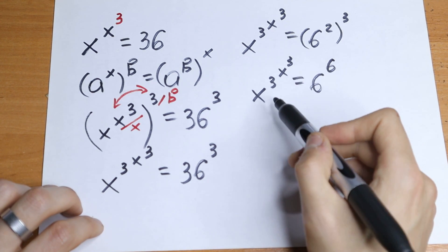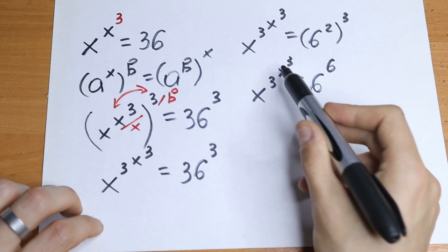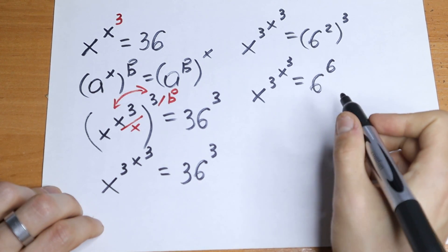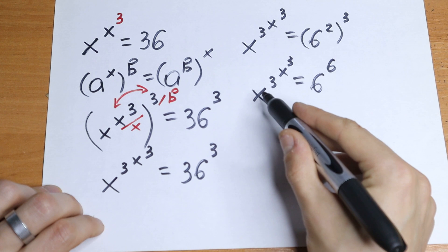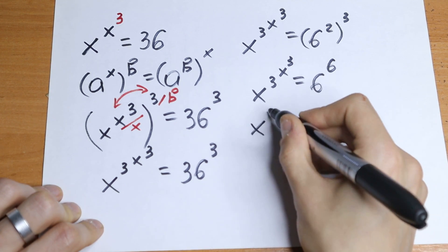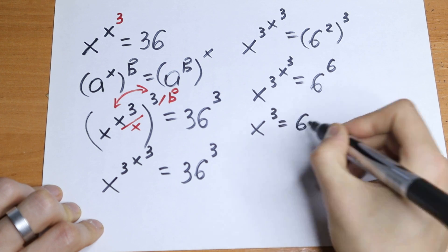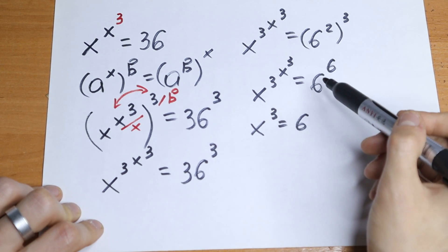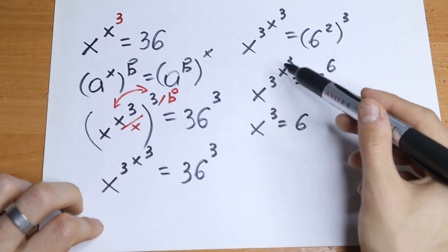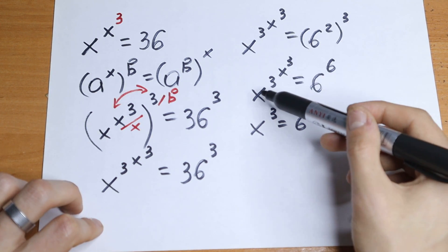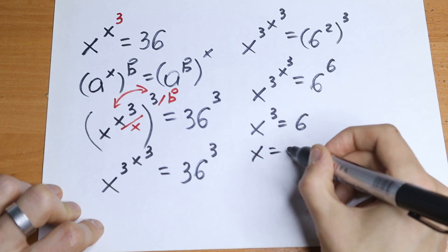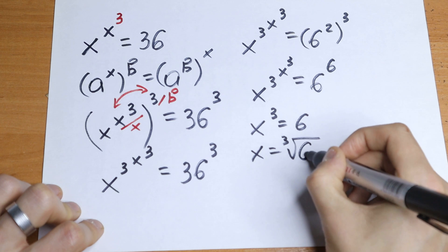We have an interesting case because we have the same base and the same exponent on the left, and the same base and same exponent on the right. The one and only case that these are equal is when x cubed equals 6. This is the only solution because both sides share the same base and same exponent structure. So x cubed will be equal to 6.